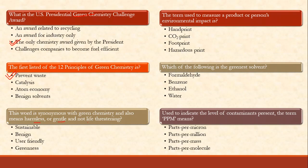This word is synonymous with green chemistry and also means harmless, gentle, and not life-threatening. Sustainable? Not exactly, because it includes all — economical, social, and environmental aspects. Sustainability is not about being gentle. User-friendly is gentle but it could be life-threatening. It has to be benign — the answer is benign.